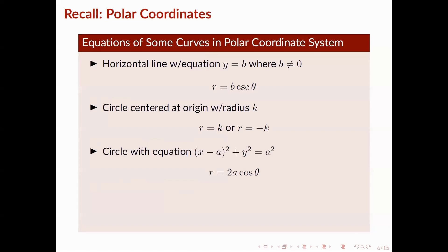For a circle with equation (x - a)² + y² = a², we have r = 2a·cos(theta). For a circle with equation x² + (y - a)² = a², we have r = 2a·sin(theta).